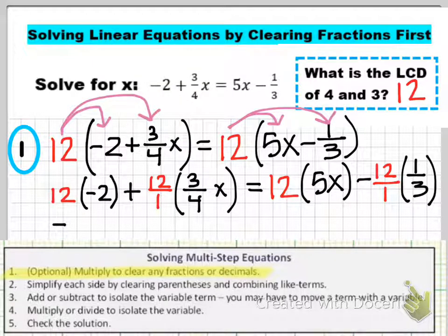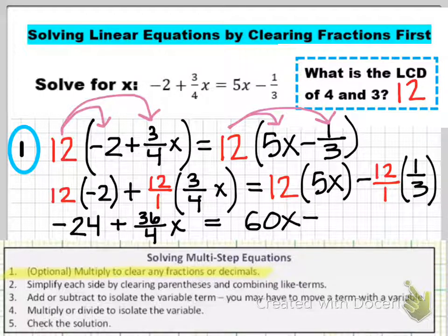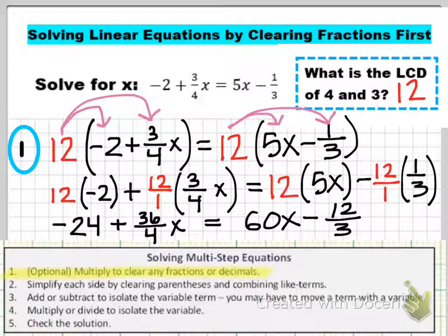Now I'm going to go through and do the multiplication. So 12 times -2 gives me -24. Now I'm going to do 12/1 times 3/4. I'm just going to multiply straight across and get 36/4x. Some of you might look at that and you can already tell that's going to become 9x. You might look at the 12 and the 4 and notice that they have a common factor of 4 and you might divide out that common factor of 4 leaving you with 9x. But I'm just going to write out this in-between step so there's no question as to where the 9x comes from later on. On the right side, I equal 60x because of the 12 times 5 and then again, I'm going to multiply straight across on my fractions minus 12/3.